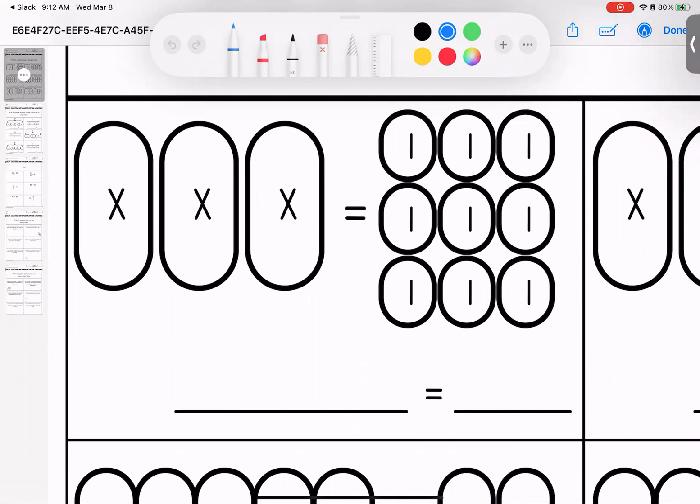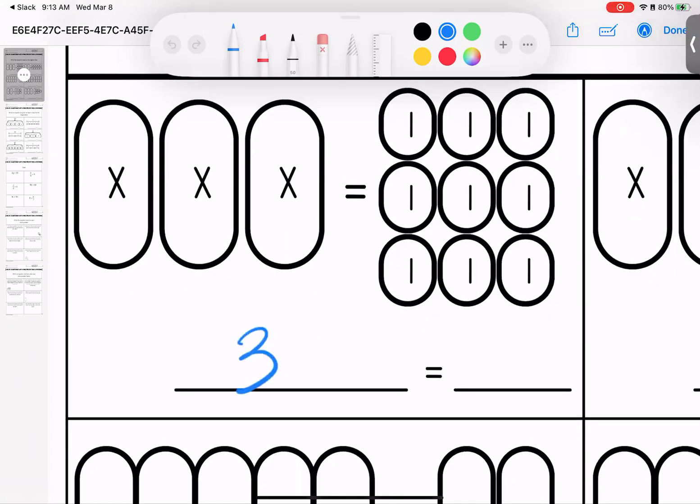All right, so these first few, these first six are actually just multiplication problems. I did put them on separate pages from some of the division just because I think that some of the division are a little bit hard. So how many x's do we have? We have three x's and what does that equal? That equals nine. Our equation would be 3x equals 9.